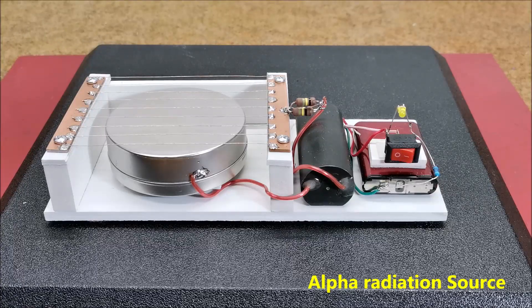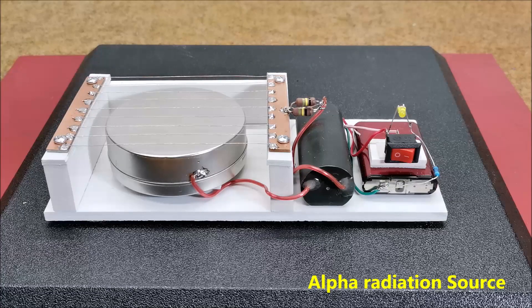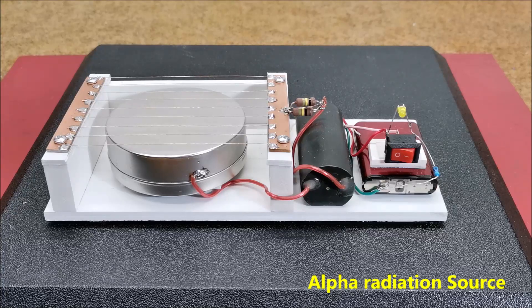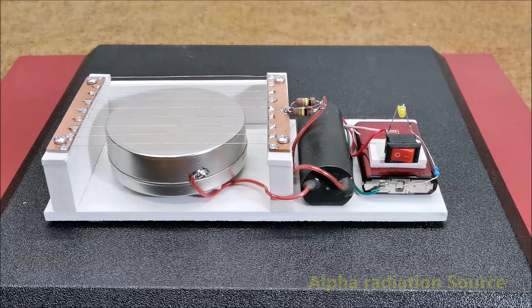The radiation emitted by this source is not dangerous because it cannot penetrate the human skin. Alpha particles have very weak ability to penetrate various materials. A piece of paper is enough to block the radiation.